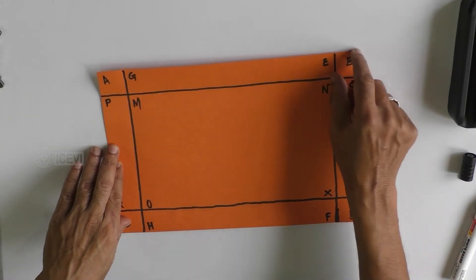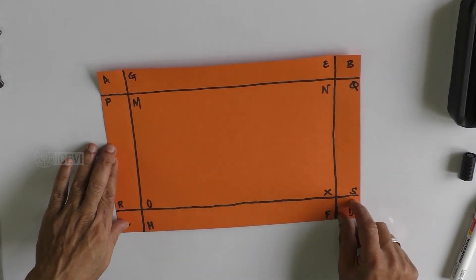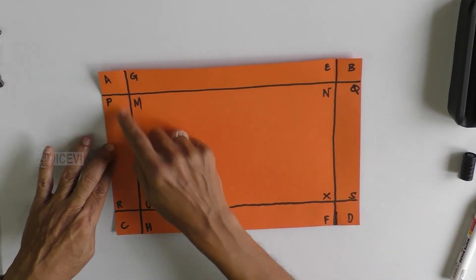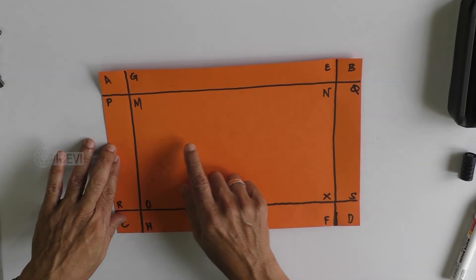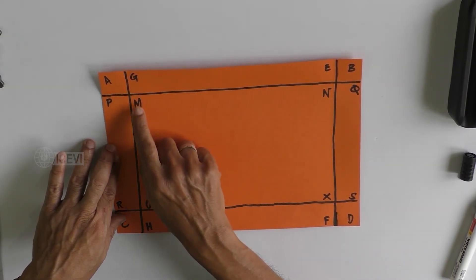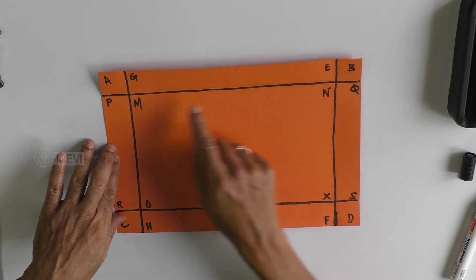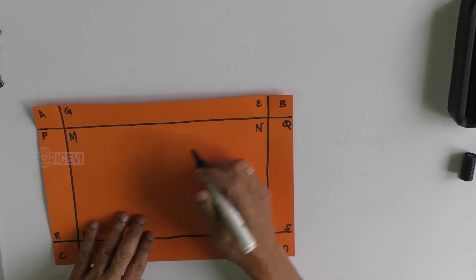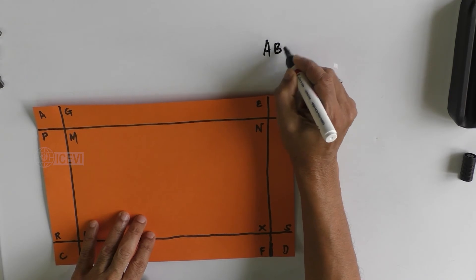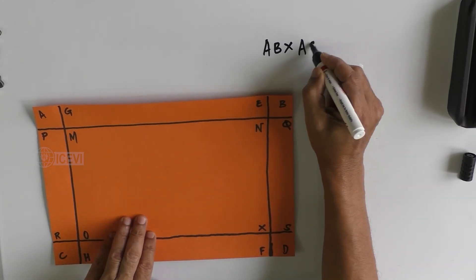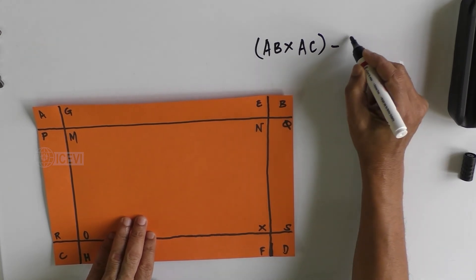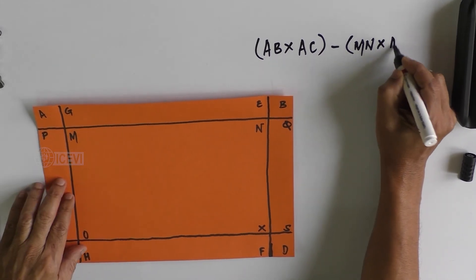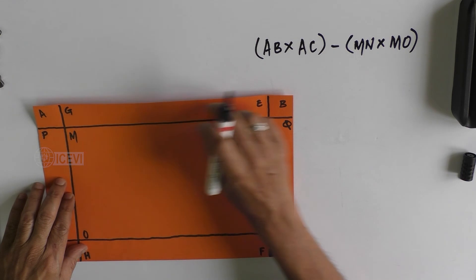The other method is if you are not interested in each sub-area of the pathway, if you are interested only in the total area of pathway, another method is taking the outer area, that is AB multiplied by AC, and to calculate the inner area of the rectangle, that is MN multiplied by MO, and subtract the inner area from the outer area.